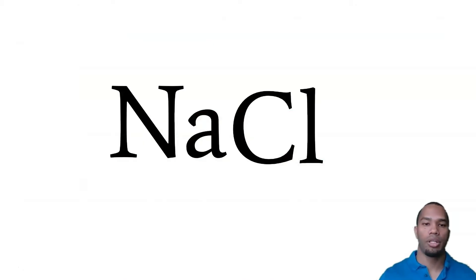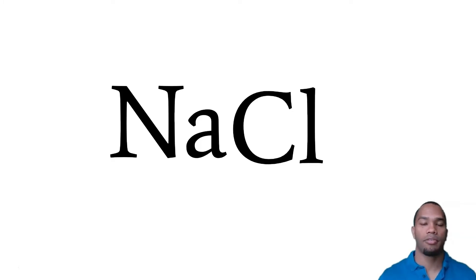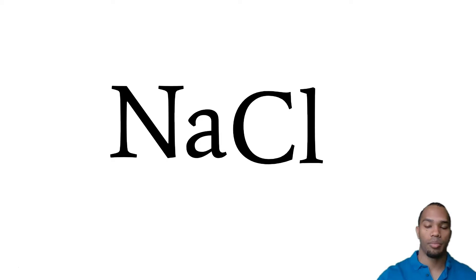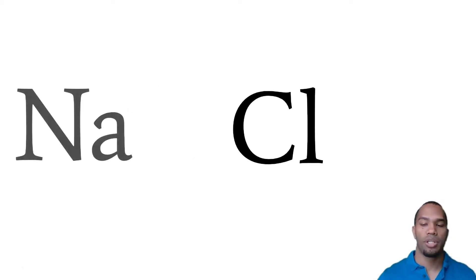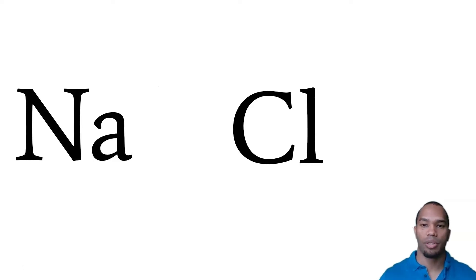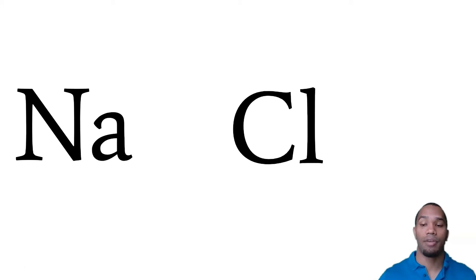So to reiterate, here we have a chemical compound and let's figure out what kind of atoms we're dealing with. Let's take a look at the first few letters. We have capital N and a lowercase a, so this means we're dealing with one element — sodium, that's Na. And then we notice we have a capital C and a lowercase l, so that is another single element. So this is sodium chloride — actually, this is everyday table salt.